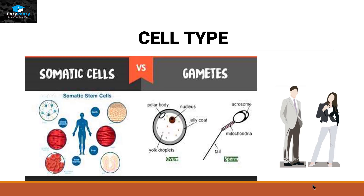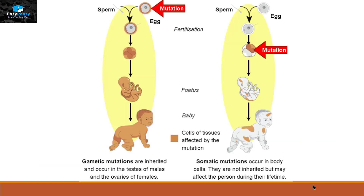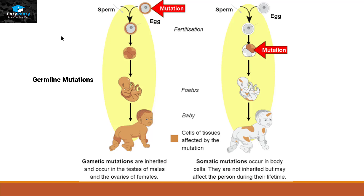If the mutation occurs in the gametes before fertilization — as you can see in this picture, this egg is mutated before fertilization — this type of mutation will appear inside the individual and will pass on to the next generation as well. The type of mutation that occurs within the gametes before fertilization is called a germline mutation.